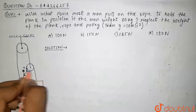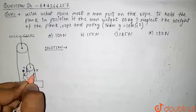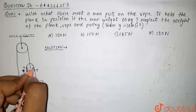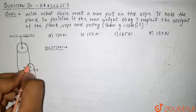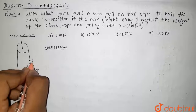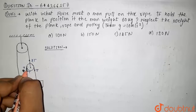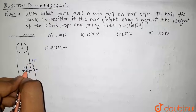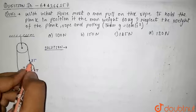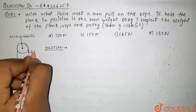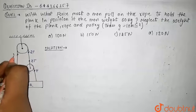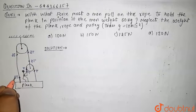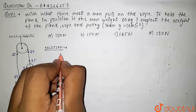So this downward force will also be T, and this will also be T. Since the pulley is massless, the upward force will be equal to the sum of the downward forces, so it will be T plus T, that is 2T. So this force will also be 2T, and this force will also be 2T.